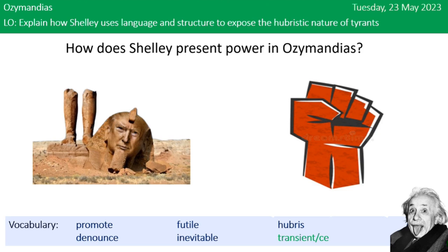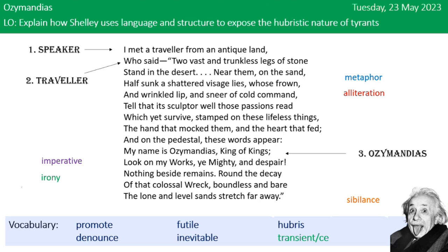The question we're looking at today is: how does Shelley present power in Ozymandias? In your exam you have to compare Ozymandias to one other poem, but let's just focus on Ozymandias for now. I have labelled the three different speakers in the poem and some techniques. You've got the metaphor 'shattered visage,' alliteration 'cold command,' the imperative 'look on my works,' the ironic sentence 'nothing beside remains,' and sibilance in 'sand stretch far away,' which reflects the sounds of wind on sand and creates the feeling of extensive space, further exaggerating the insignificance of humans.